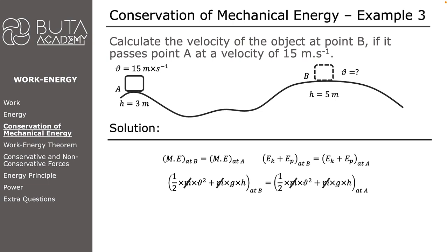As a result, each side of the equation can be written as 1 over 2 times the square of velocity plus the product of gravitation acceleration and the height of the object. We don't know the velocity at point B. Gravitation acceleration is 9.8 and height at point B is 5 meters.